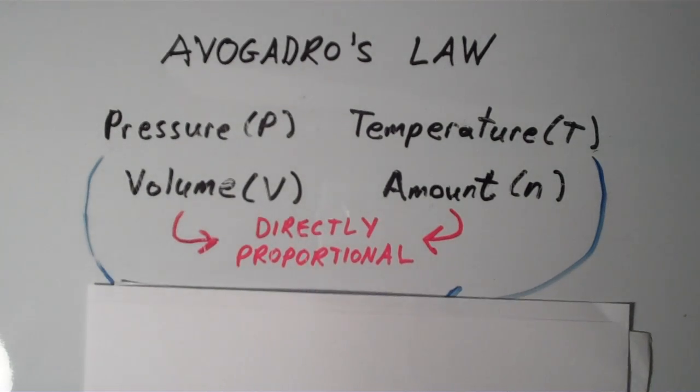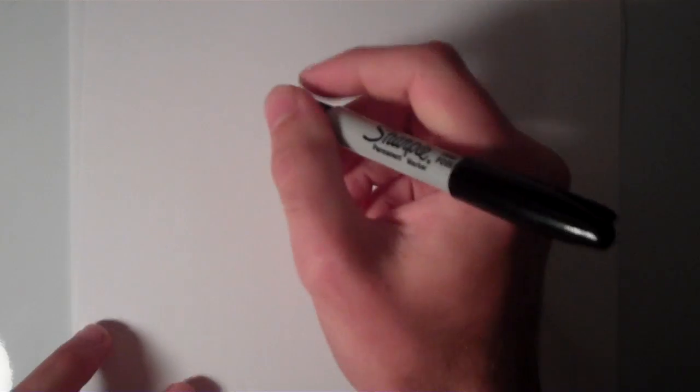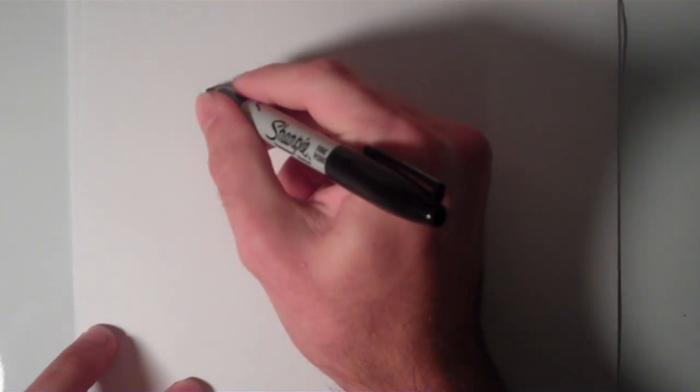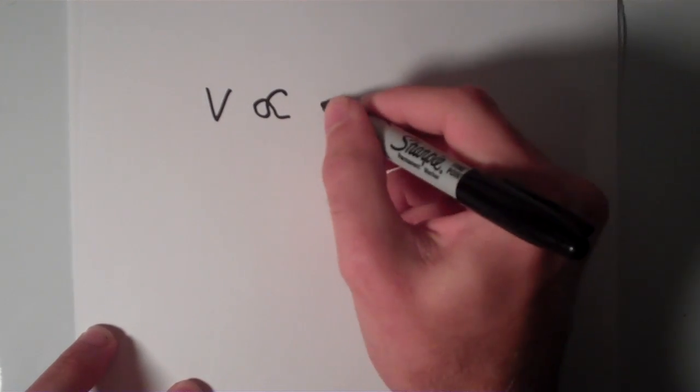So, like I said, if the pressure and the temperature of the gas are kept constant, so those two are constant, then the volume of the gas, V, is proportional to the amount of the gas, N.